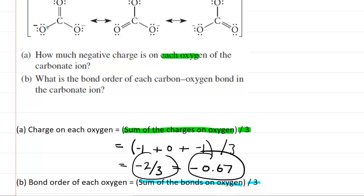So for example, in the first structure, we see there is one bond connected to that oxygen. In the middle structure, there are two. And then in the final structure, there is one bond. So we're going to add those together.